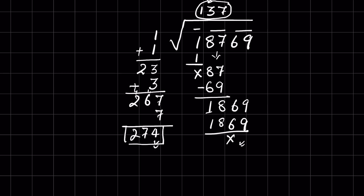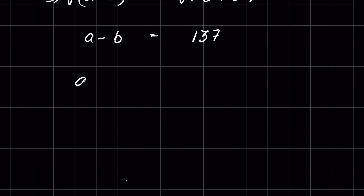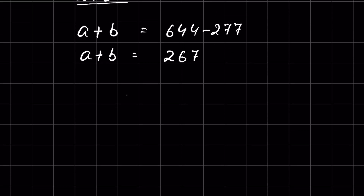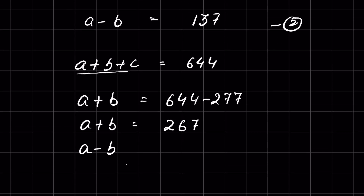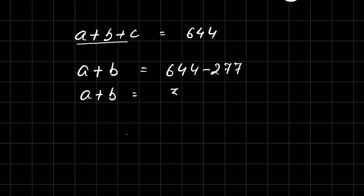So the square root of 18769 is 137, meaning a minus b equals 137. From the perimeter we already found a plus b equals 367. Let this be equation 2, so a minus b is 137.